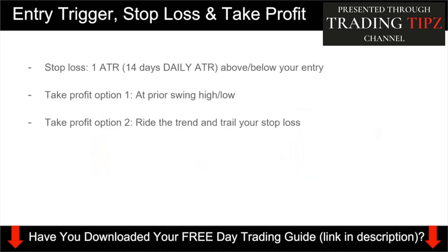For your stop loss, set it at 1 ATR above or below your entry. Use the 14-day daily ATR - always go to the daily chart to find this. For example, if the ATR is 40 pips, set a stop loss of 40 pips from your entry. For take profit, you have two options: option one is to exit at the previous swing high or swing low; option two is to trail your stop loss - either below the 50-period moving average or according to market structure.